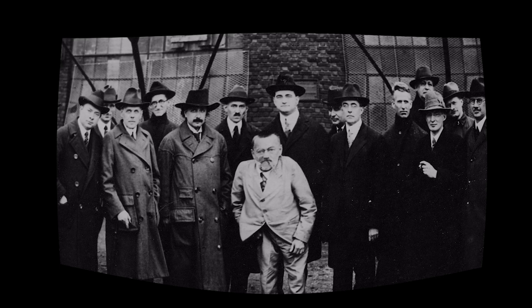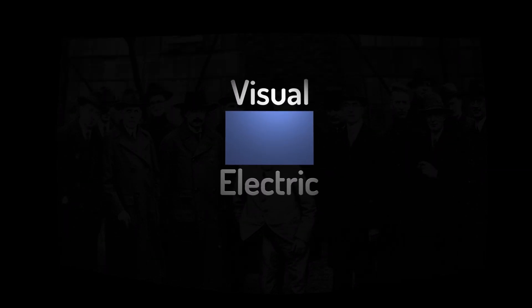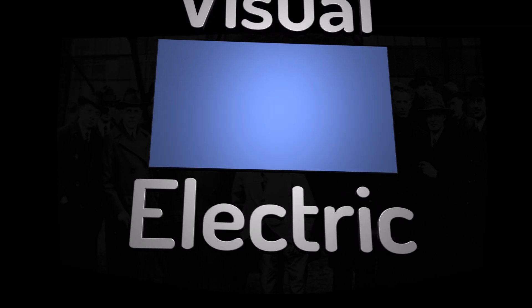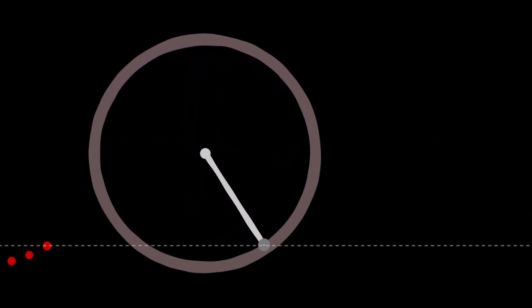But what is the system of phasors and why did it become the dominant system? Steinmetz's system was based on the rotating phasor, which is simply a line which rotates around a circle.